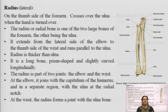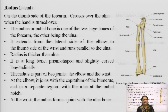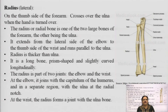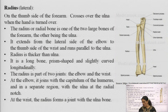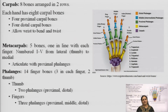The radius is part of two joints: the elbow and the wrist. At the elbow, it joins with the capitulum of the humerus, and separately with the ulna at the radial notch. At the wrist, it forms the joint with the carpal bones.